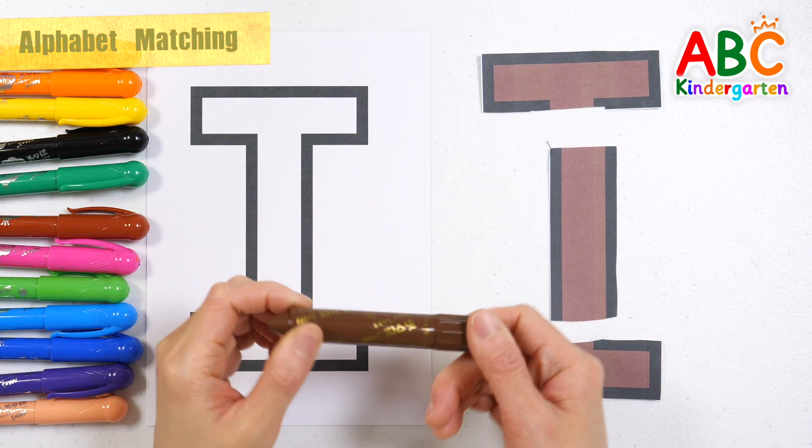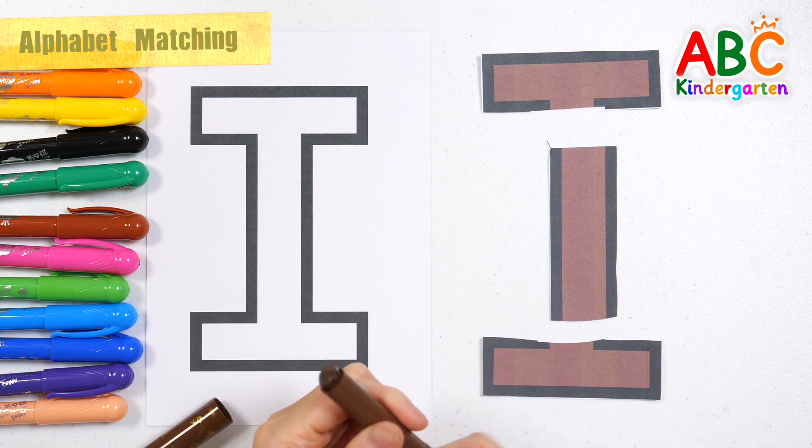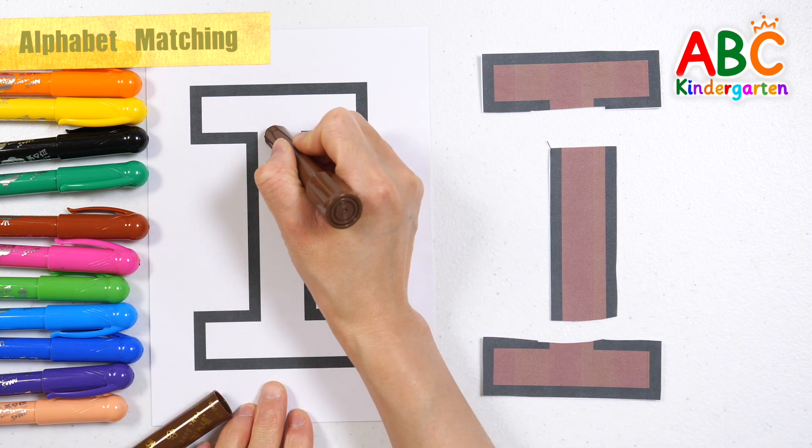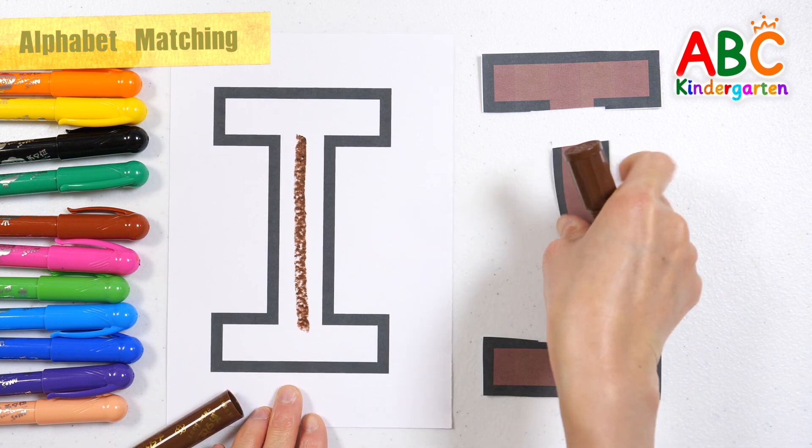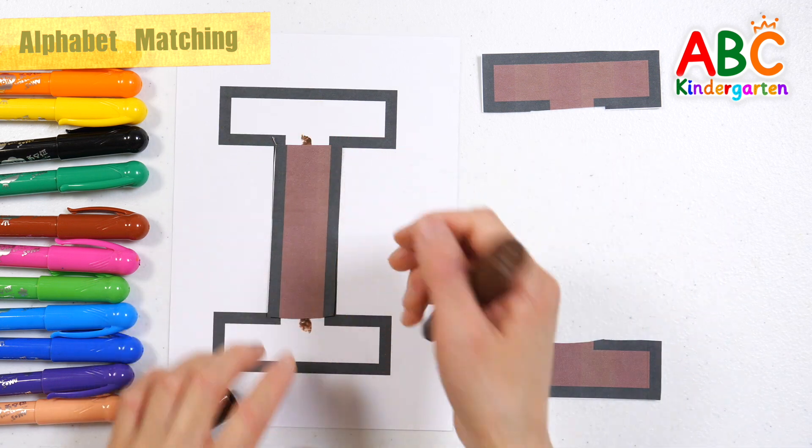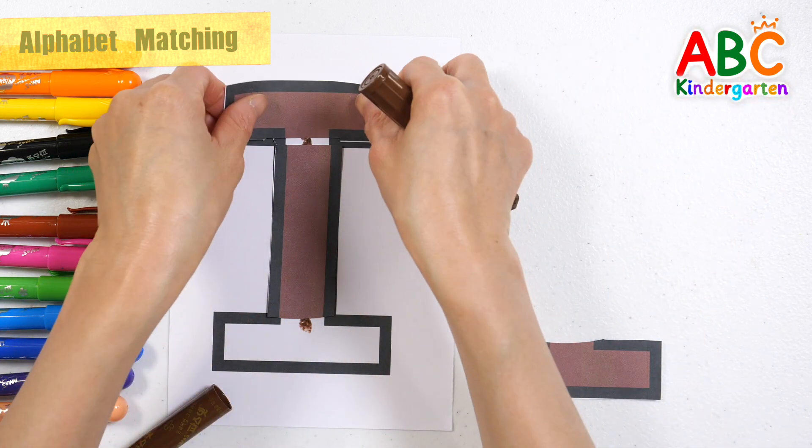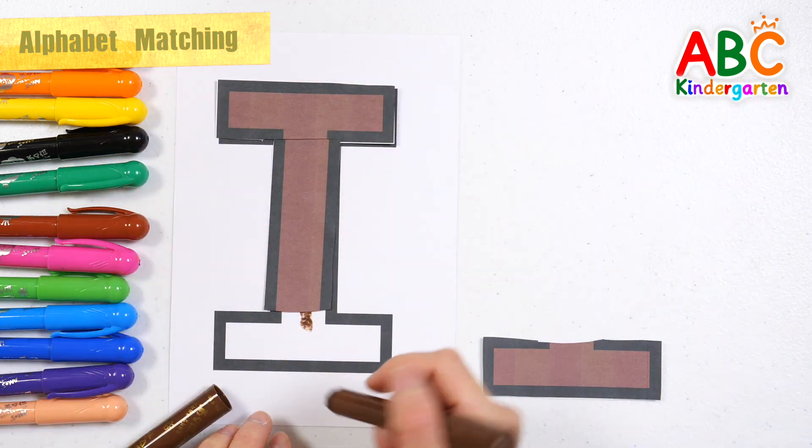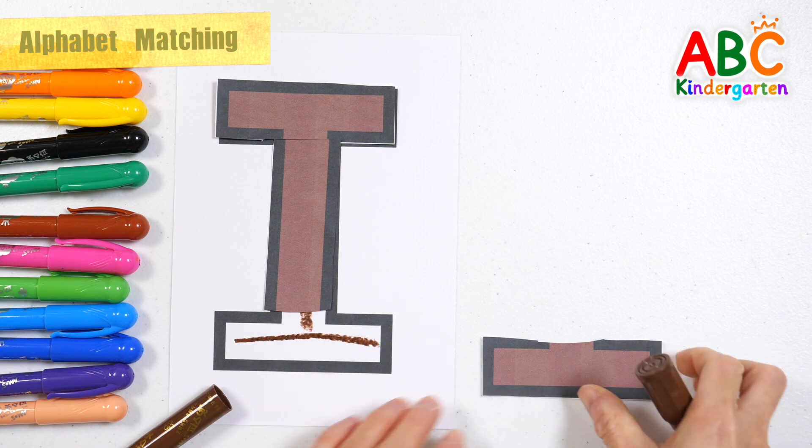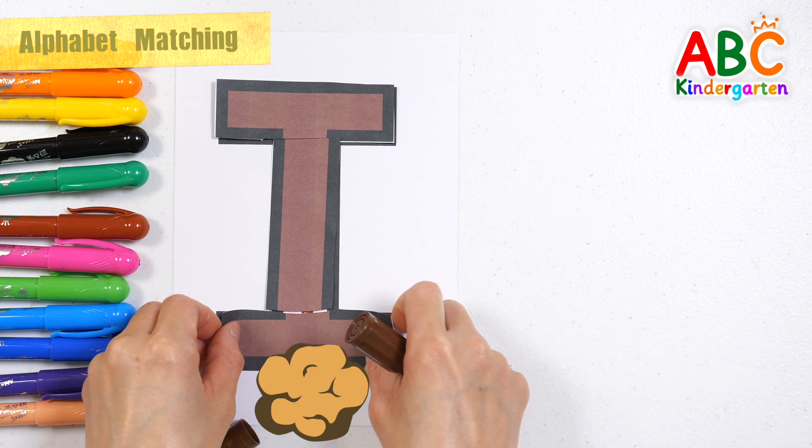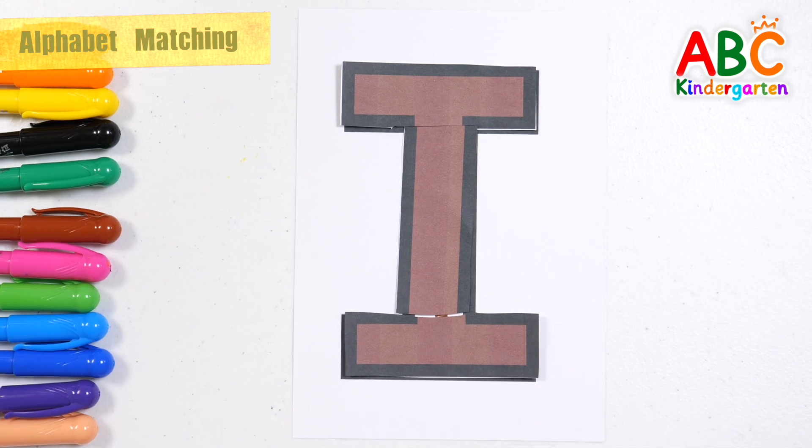This time, let's put the alphabet pieces in place by writing the letters with brown crayon on the left. Alphabet I?